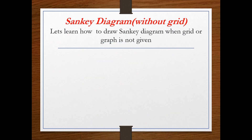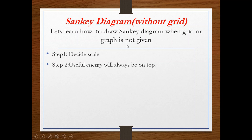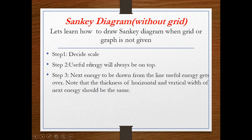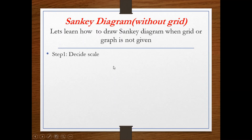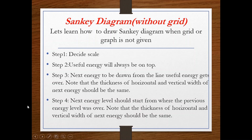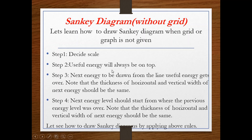Now we'll learn Sankey diagrams without a grid. Step one: decide the scale. Step two: useful energy will always be on top. Step three: the next energy is drawn from the line where the useful energy gets over — same as with the grid. The next energy level should start from where the previous energy level ended, and the thickness or width of each arrow must remain the same throughout.